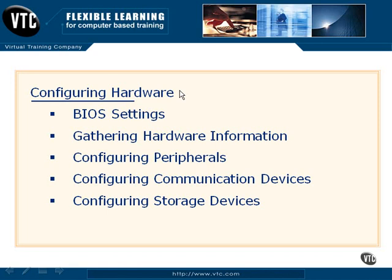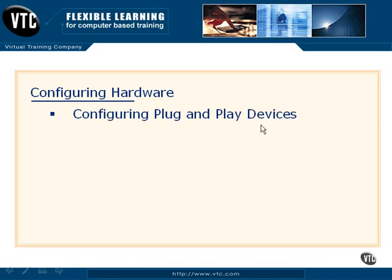We're going to take a few minutes and talk about BIOS settings, which is definitely an important part of any operating system configuration. We'll talk about gathering information about your existing hardware, taking a look at the existing peripheral configuration and placement on the file system. We'll also cover communication devices such as serial and parallel ports, storage devices, and finally plug-and-play devices — discovering what they are in the Linux world, where they exist, and how you might configure them.